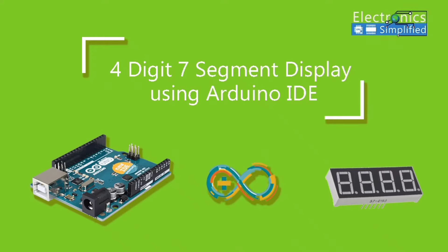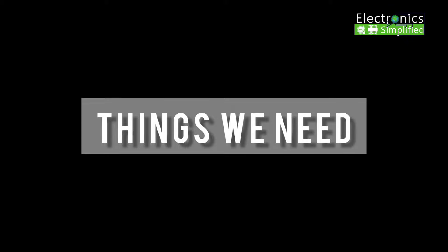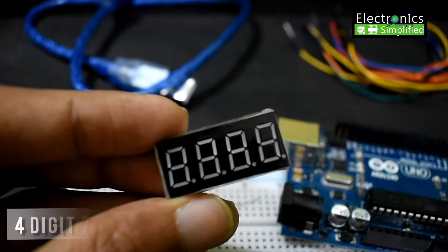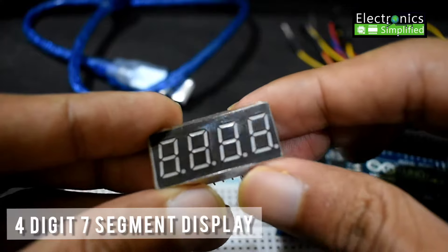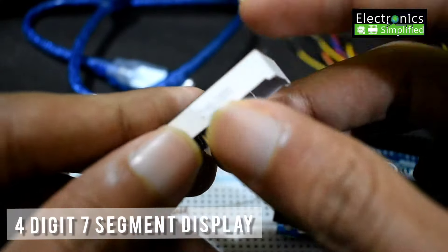4-digit 7-segment display using Arduino IDE on ES. Things we need are the 4-digit 7-segment display itself. This is a major part of our project today.